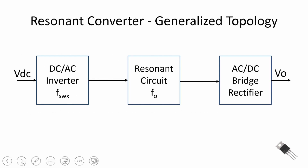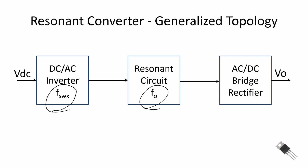Recall from our generalized topology of resonant converters that it contains three building blocks. The front end is the DC-to-AC converter, and we control the switching frequency of that AC output signal. We feed that power signal into a resonant circuit that has a resonant frequency F-sub-zero, and that's what we're going to analyze in this video.